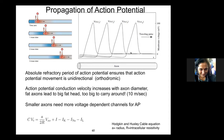Action potentials are unidirectional. Where does this unidirectionality come from? The secret lies in the refractory period. After depolarization and repolarization, the membrane becomes even more hyperpolarized than resting, and it takes time to return to resting membrane potential. During this period, it's difficult to fire another action potential. It's this refractory period that makes action potentials unidirectional — think of it like a sparkler: you're burning out that patch of membrane, so you can't go back, you just keep going forward.